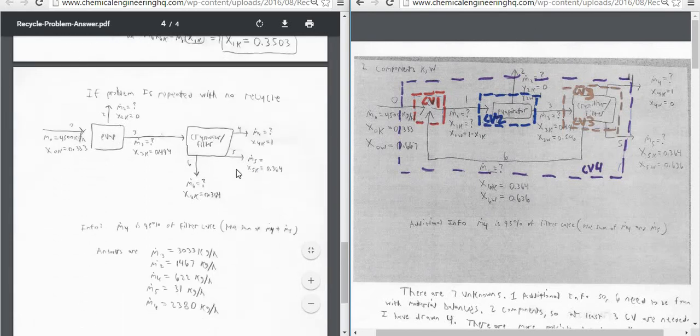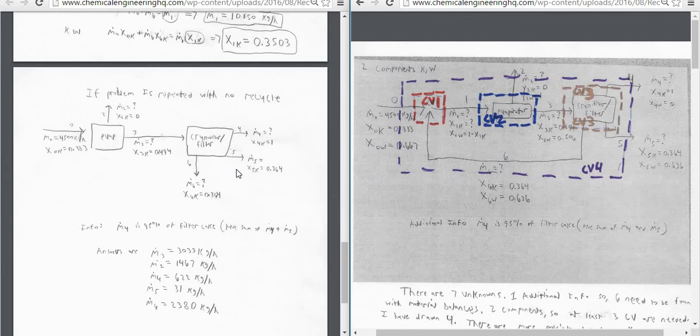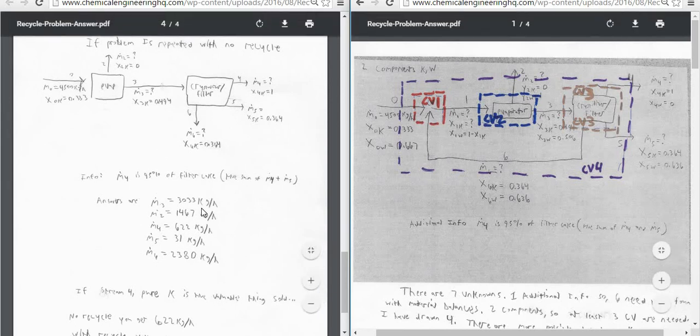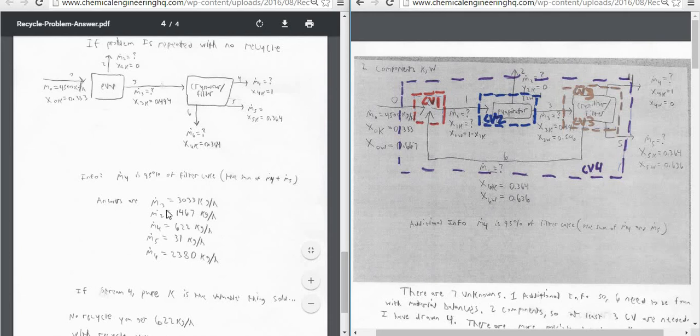So now let's look, I want to look at the problem if there was no recycle. So if you look now, we have stream 6 just comes straight down and is no longer recycled back to the front of the process. And we still have that same information. You can find that the answers here are as follows below here.